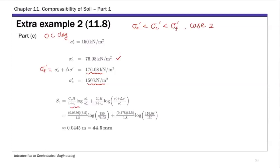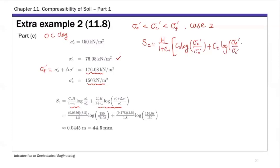For Case 2, the primary consolidation settlement is H over (1 + e₀), and delta e has two parts: one from the recompression portion using Cs times log of sigma c prime over sigma₀ prime, and a second portion from the virgin compression using Cc times log of sigma f prime over sigma c prime. Substituting all stress values along with Cs and Cc, the primary consolidation settlement for part C is 0.0445 meters or 44.5 millimeters.